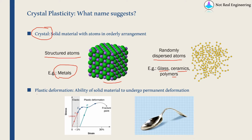Then plasticity. Plastic deformation is the ability of a solid material to undergo permanent deformation. On a general stress-strain curve, when you apply a load on any material, initially it will be in an elastic phase — if you remove the load, all deformation is recovered. But beyond a certain point, if you remove the applied load, there will be some permanent deformation. This is known as plastic deformation. In crystal plasticity, we study how crystals undergo permanent deformation.